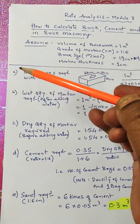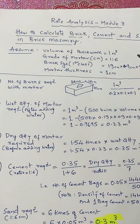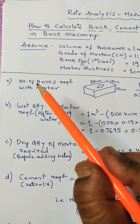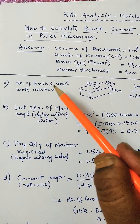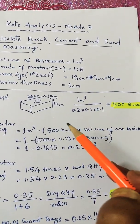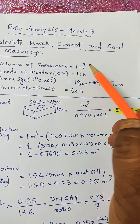So there are five steps to calculate the materials in this 1 meter cube of brickwork. First step is number of bricks required with mortar. We had to calculate the number of bricks required with mortar. The calculations will be for 1 meter cube.